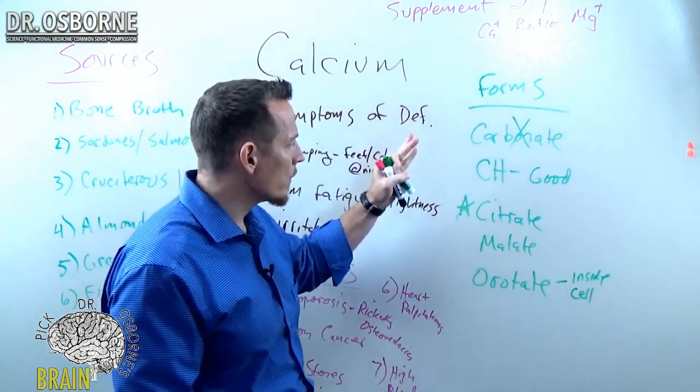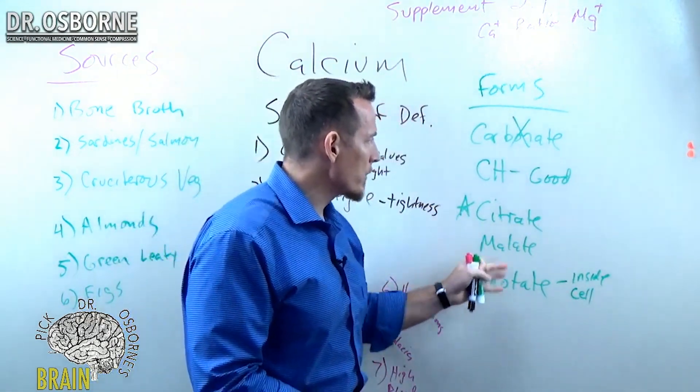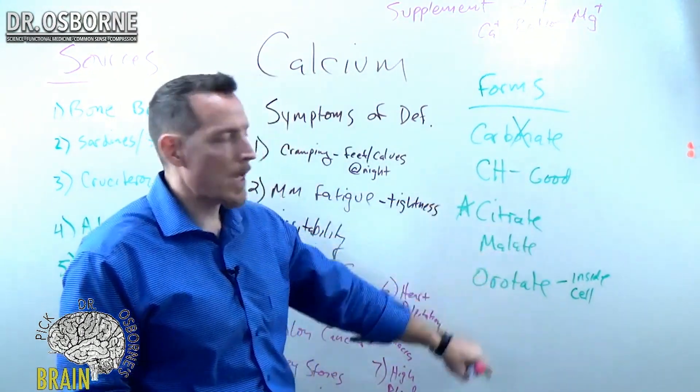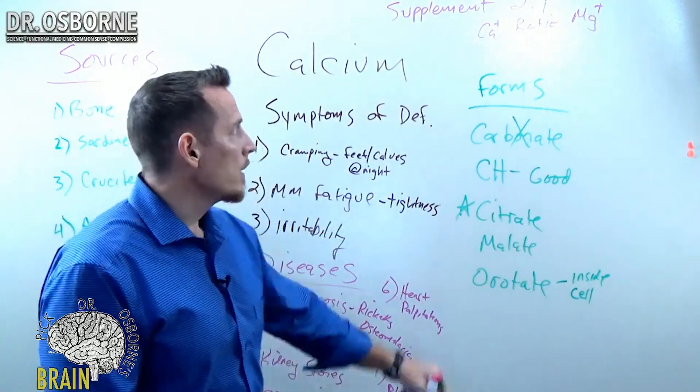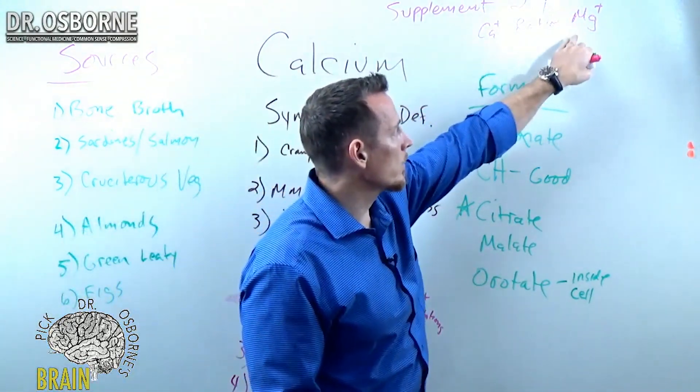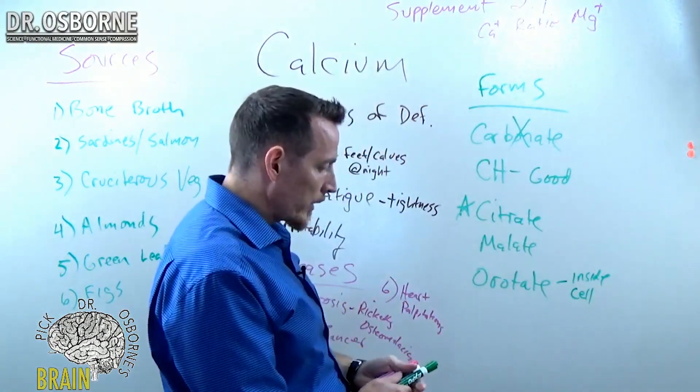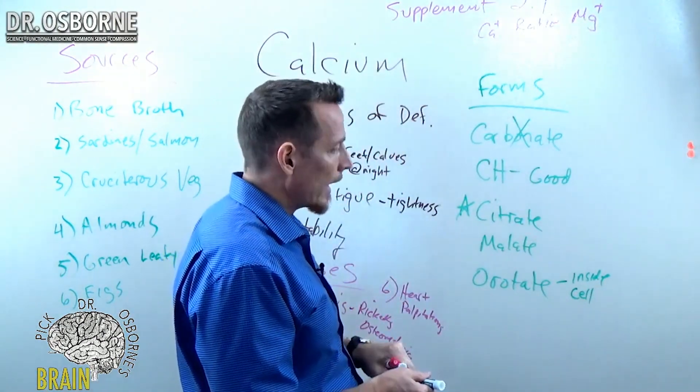So these are your basic forms. Again, carbonate's no good, calcium hydroxyapatite, calcium citrate, calcium malate, calcium orotate, preferably always taken in a two-to-one calcium-magnesium ratio, and preferably taken with vitamin K.